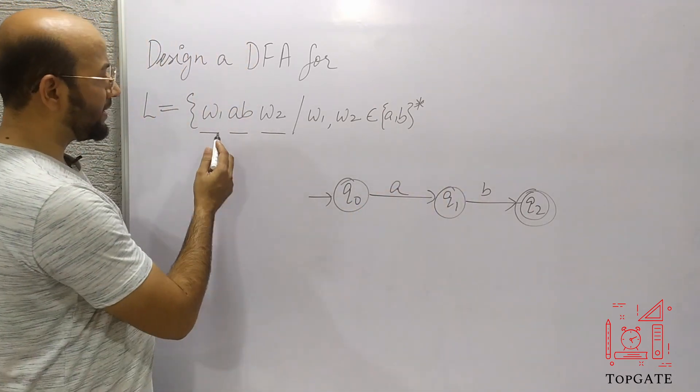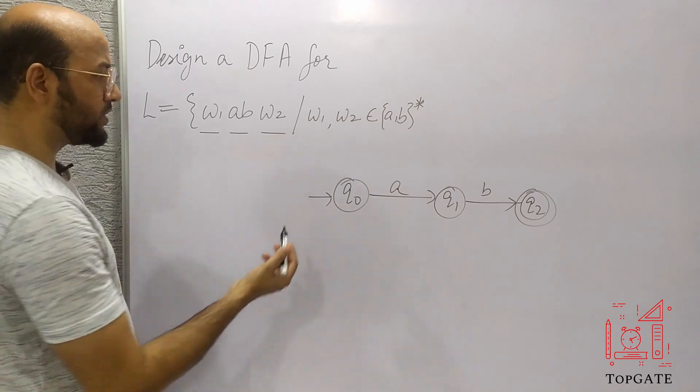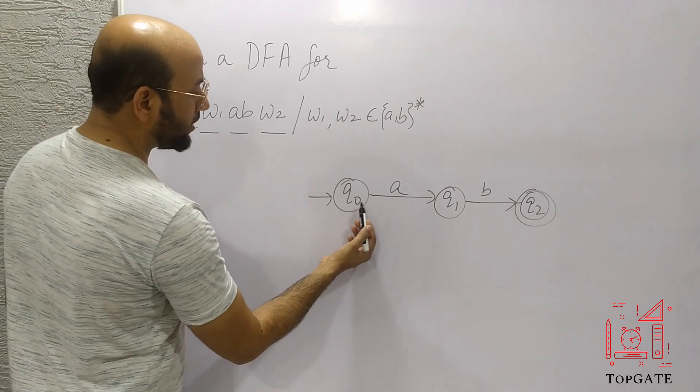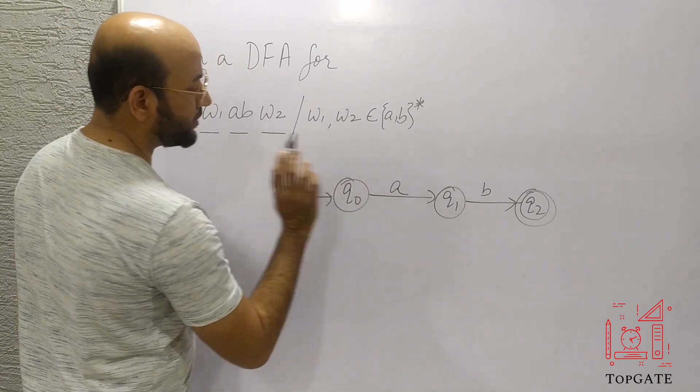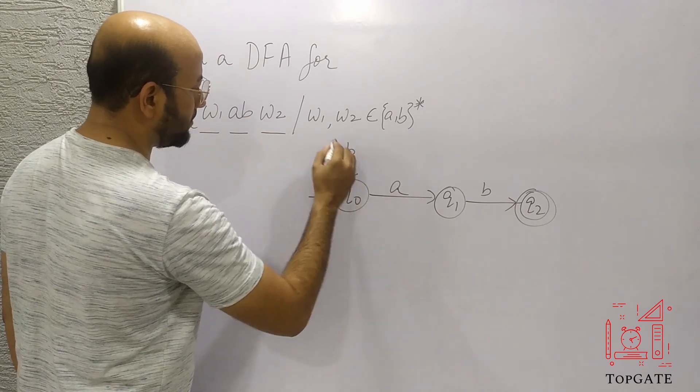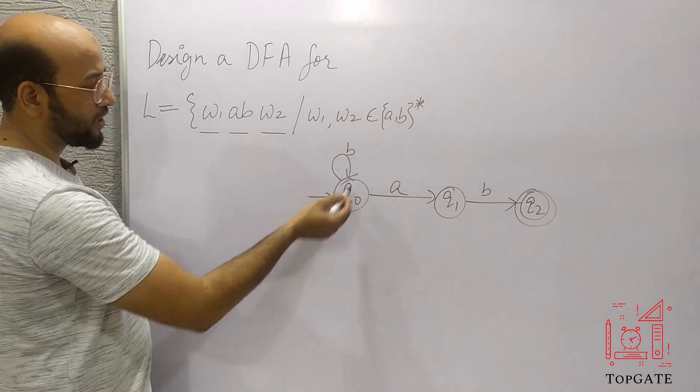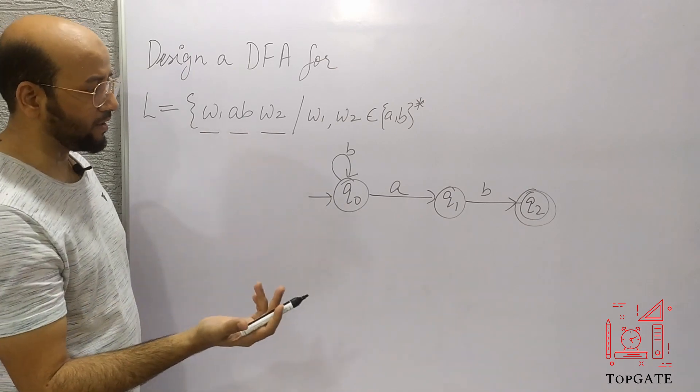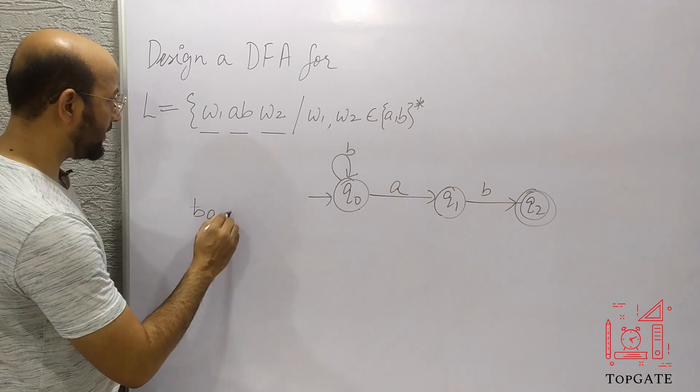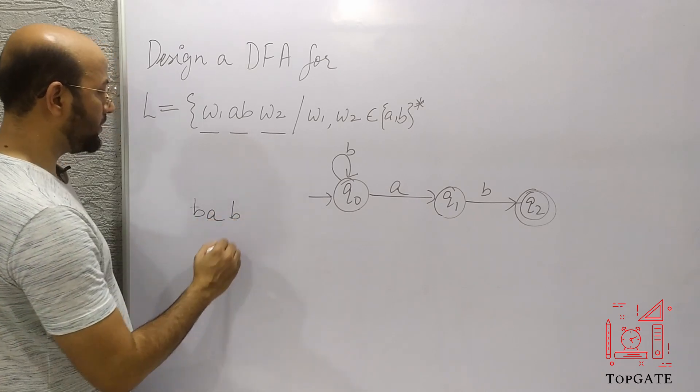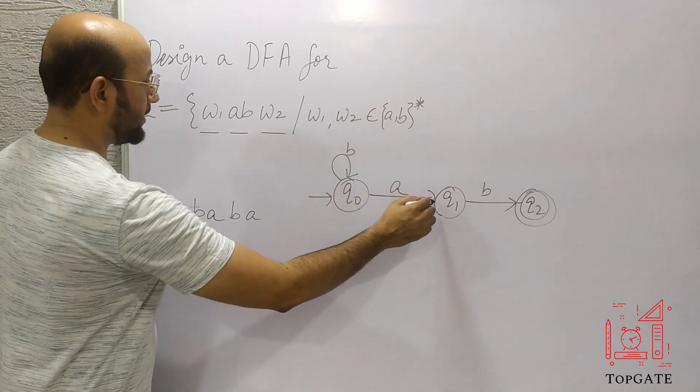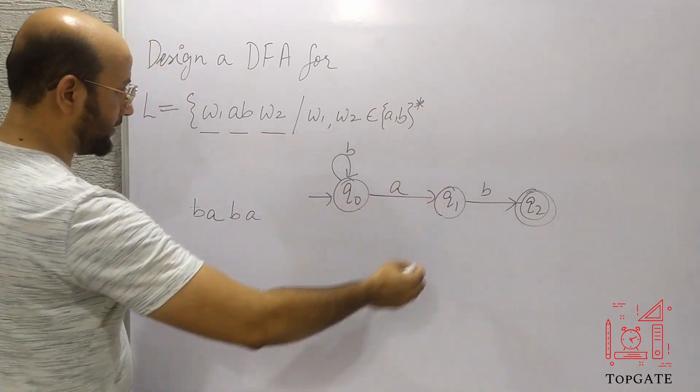Now in the starting, I can have any combination of AB. So the string can start with A also, the string can start with B also. At Q0, I have already started my string with A. So I need the path for B. So I will simply add a loop for B. So in this way, the string can start with B also and multiple Bs can come. Now suppose we have a string as B, A, B, A.